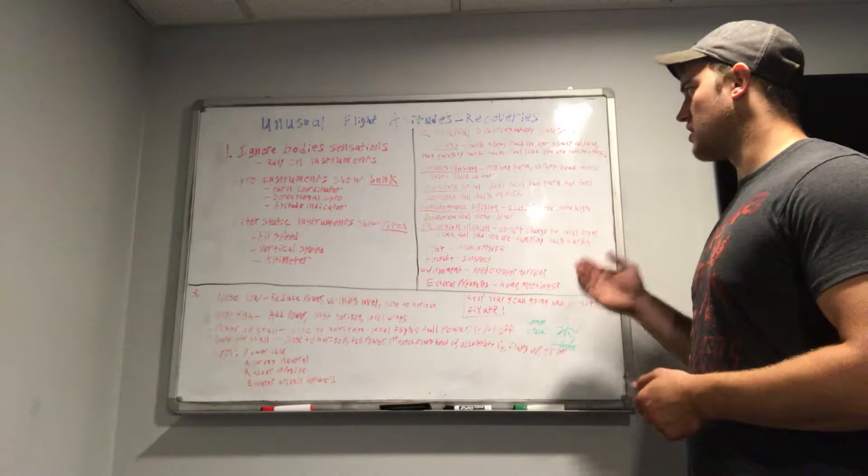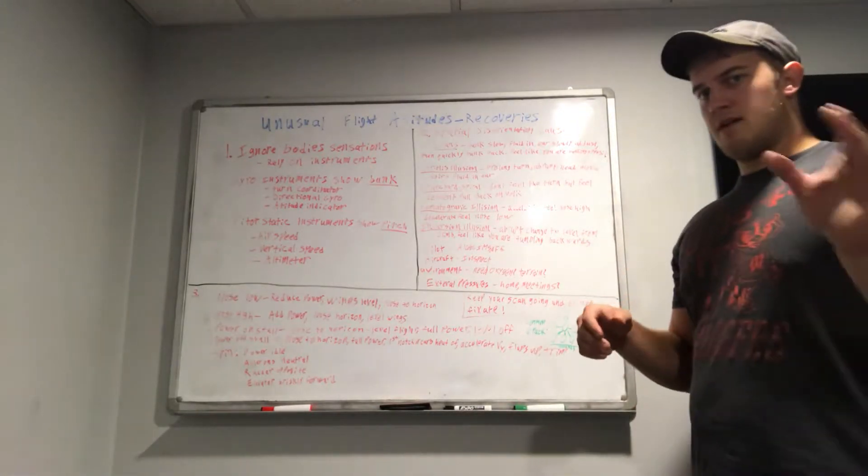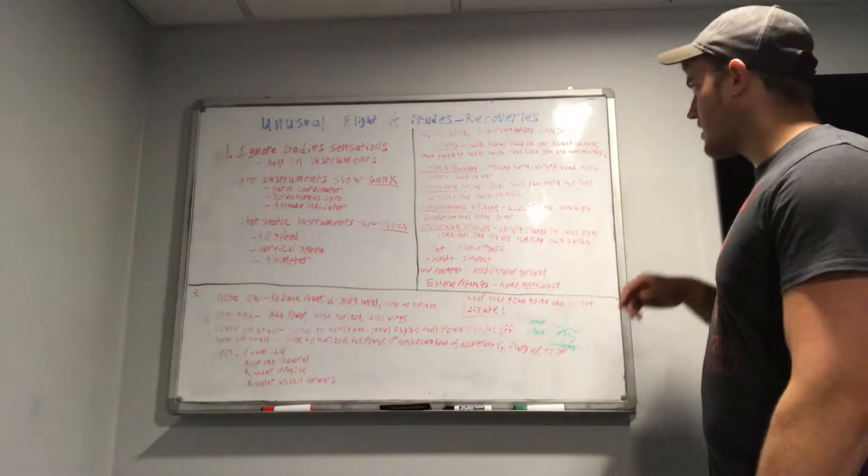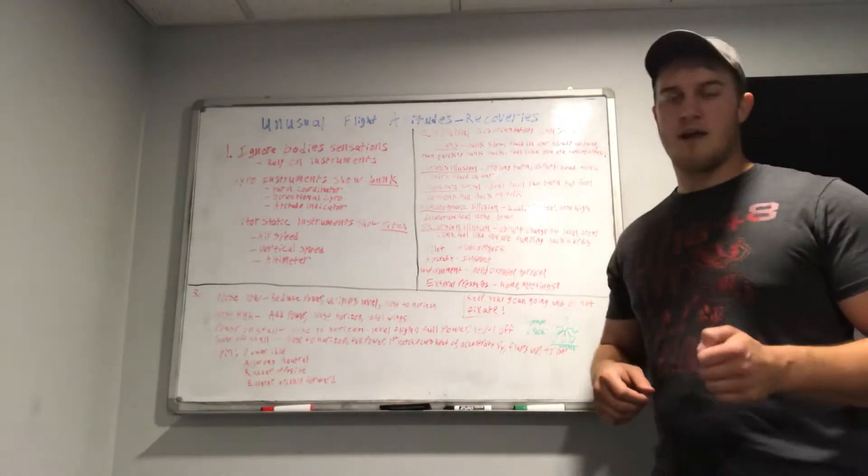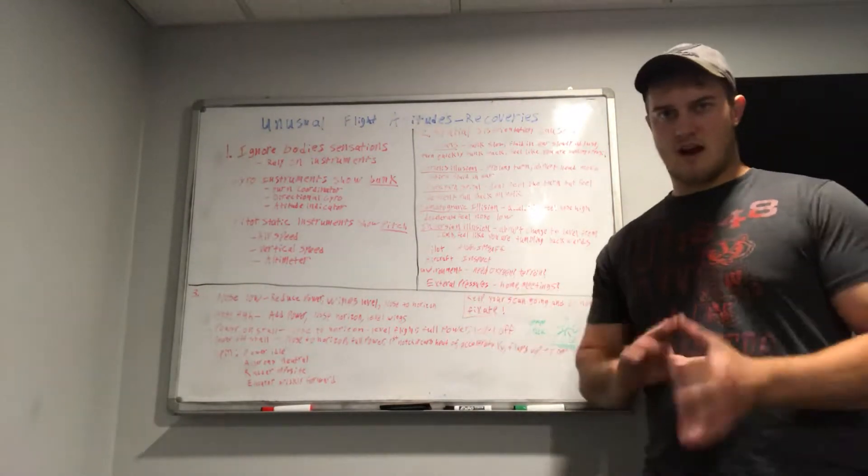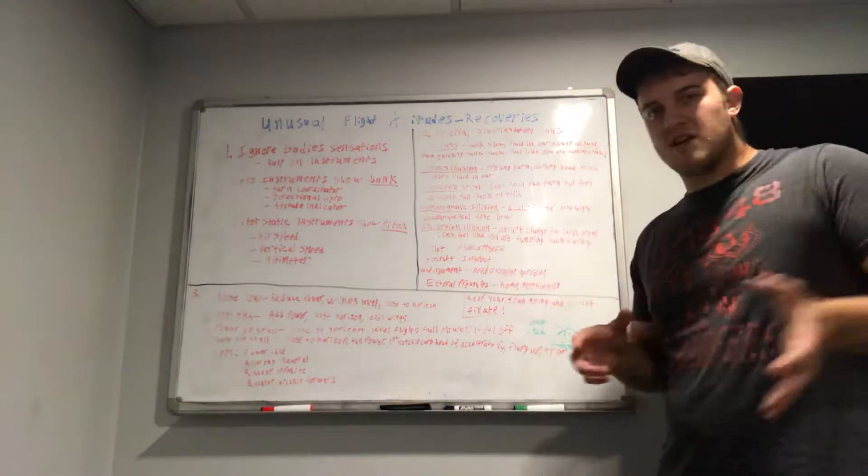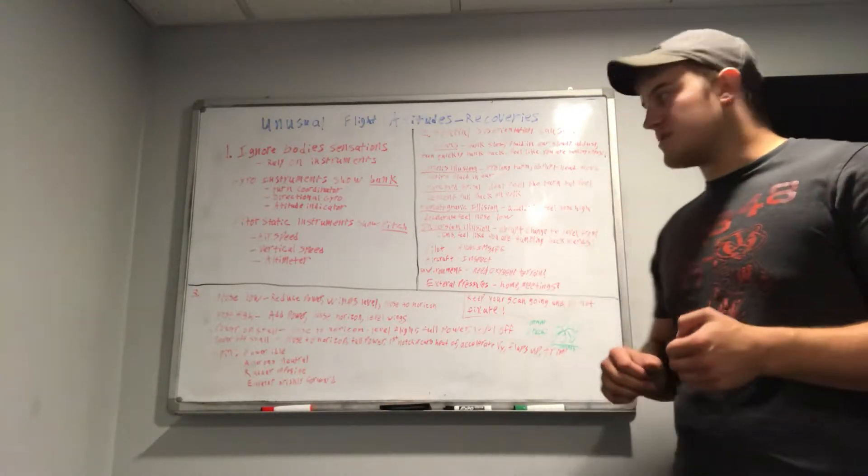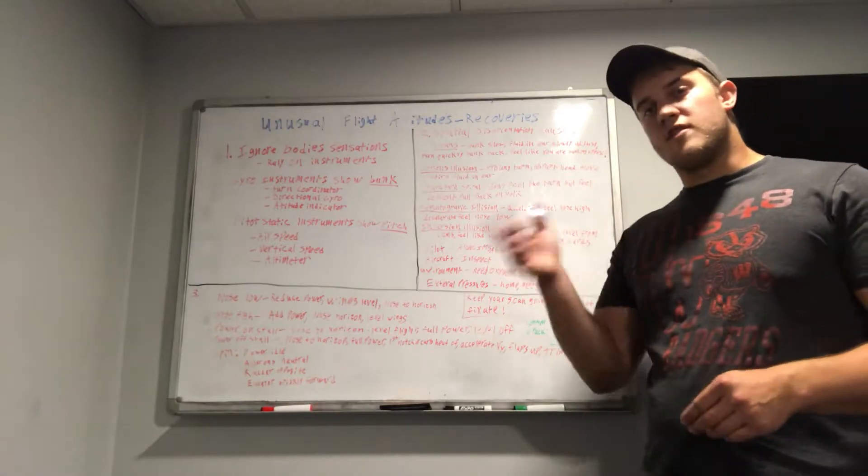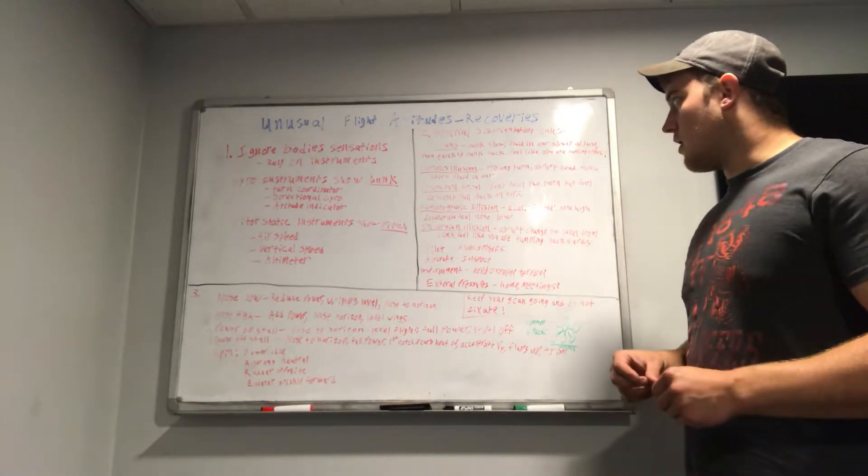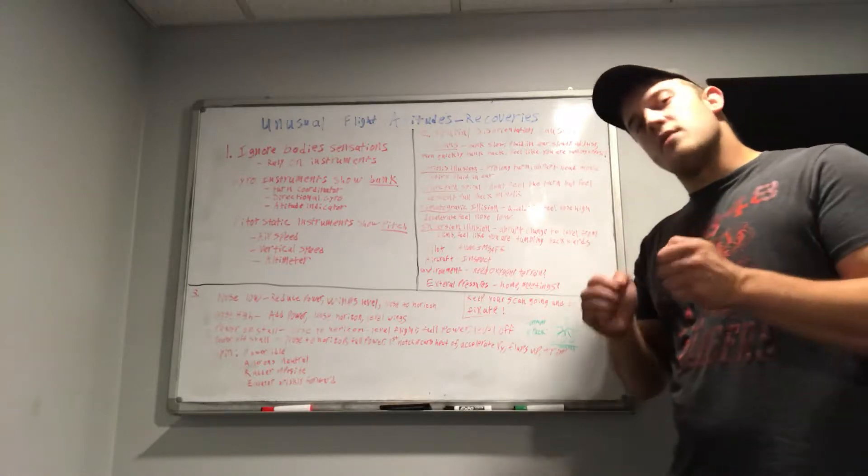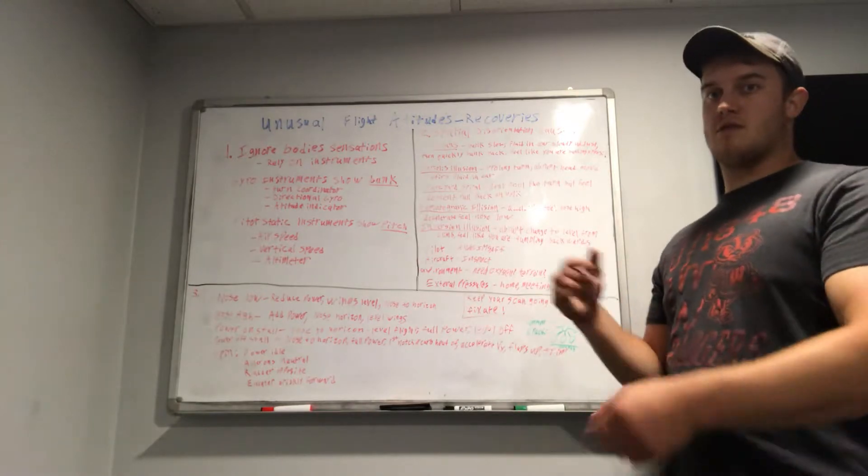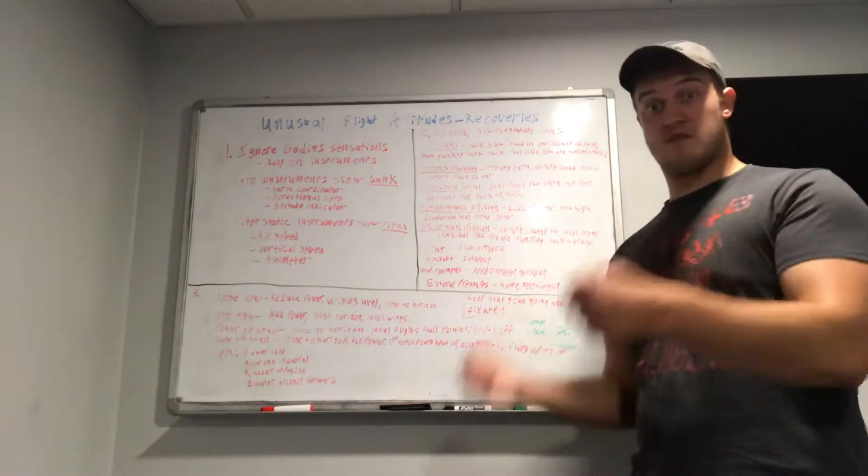And then you have the Coriolis illusion, which is almost the same as the leans, but here's how it's different. Again, you're in a prolonged turn, fluid is level, and all of a sudden you do any abrupt head movement. You shouldn't be doing this at any time anyways because it can stir up the fluid in your ears and give you false sensations. And what that can do is it can send you for a false loop. Anytime you do that, it'll slosh it around and you can feel like you're tumbling backwards or you're spinning or you're increasing your bank.